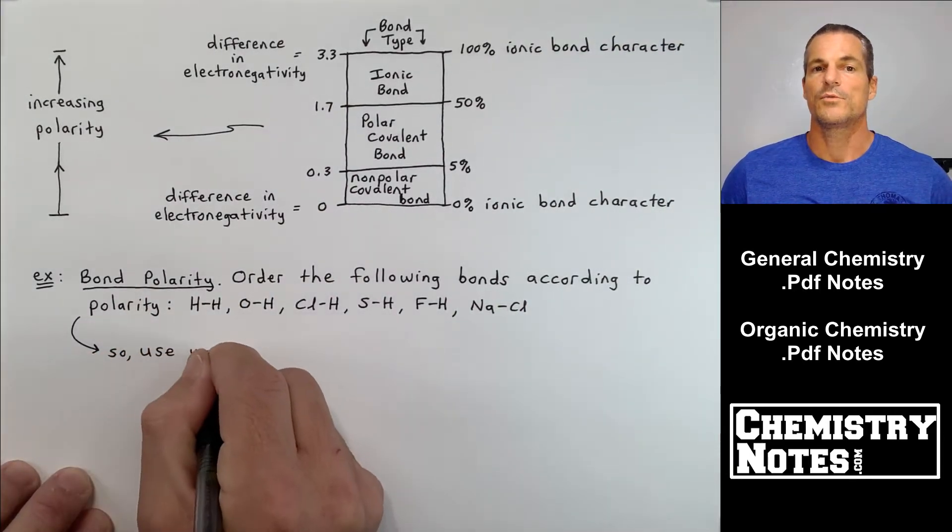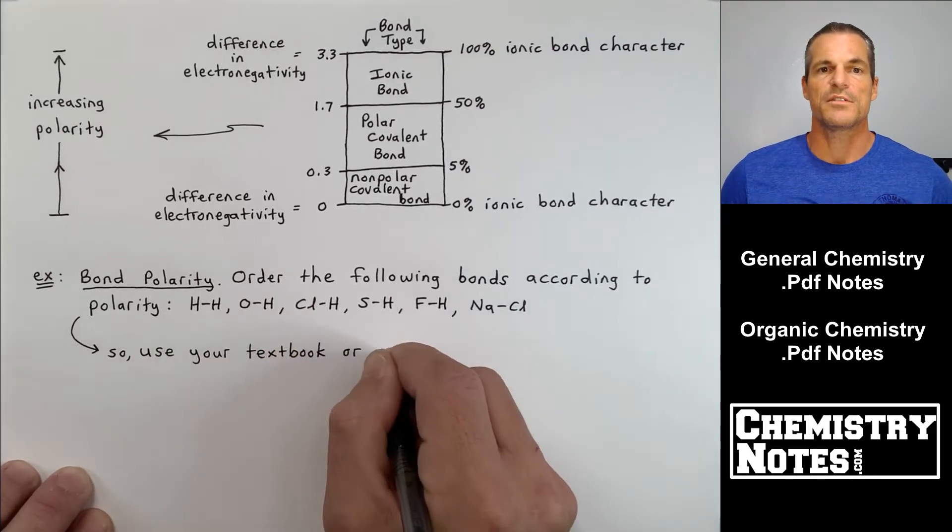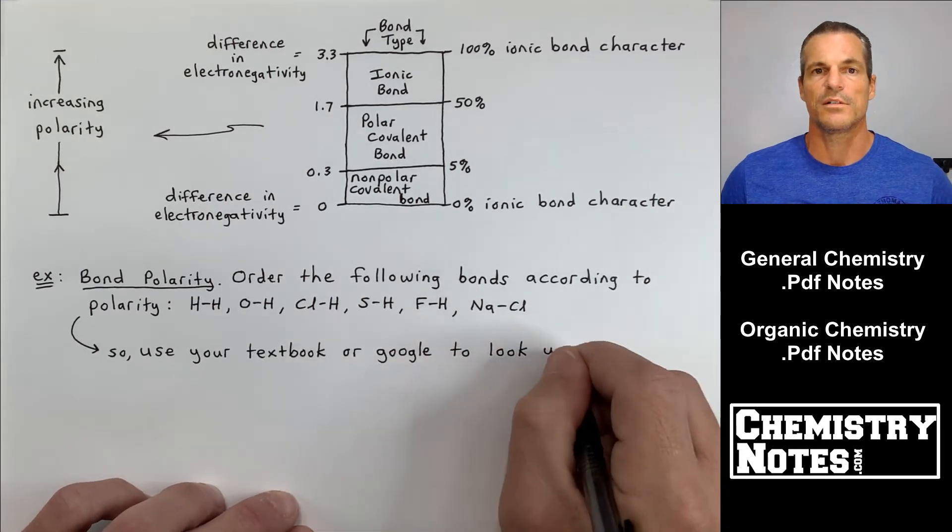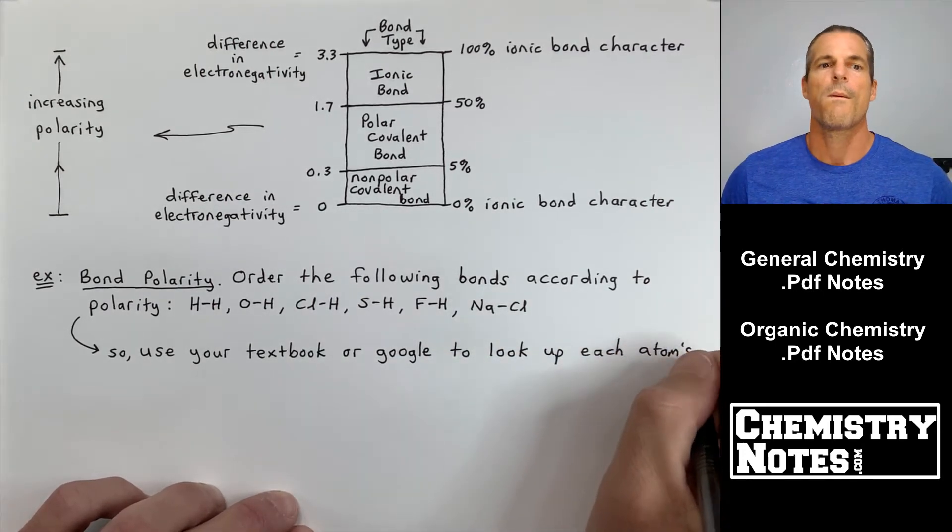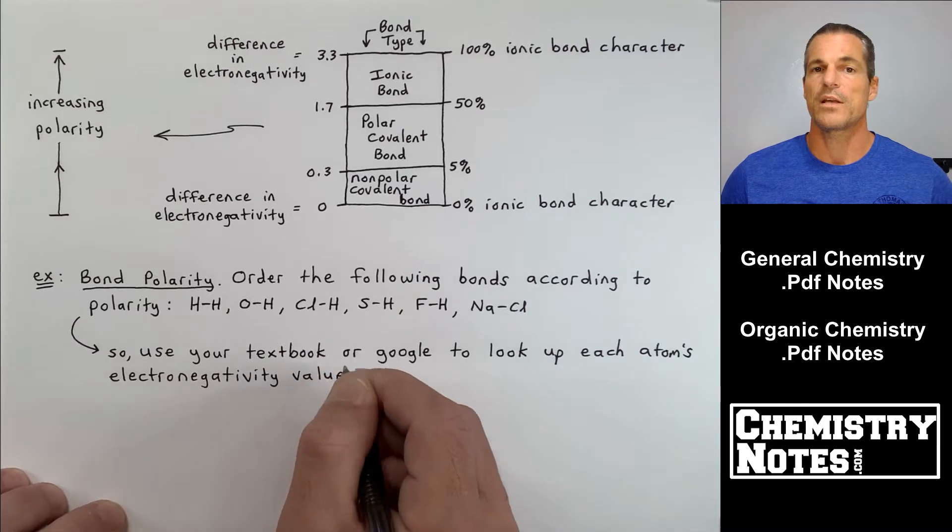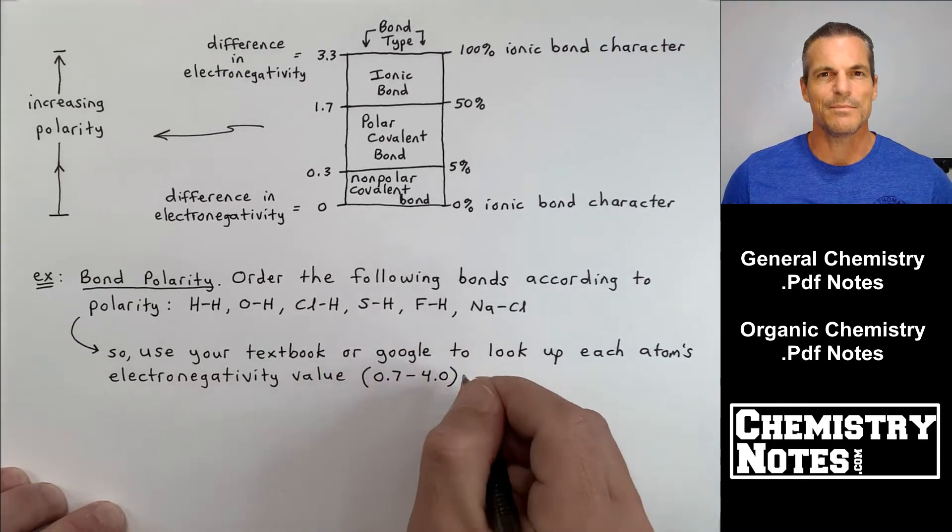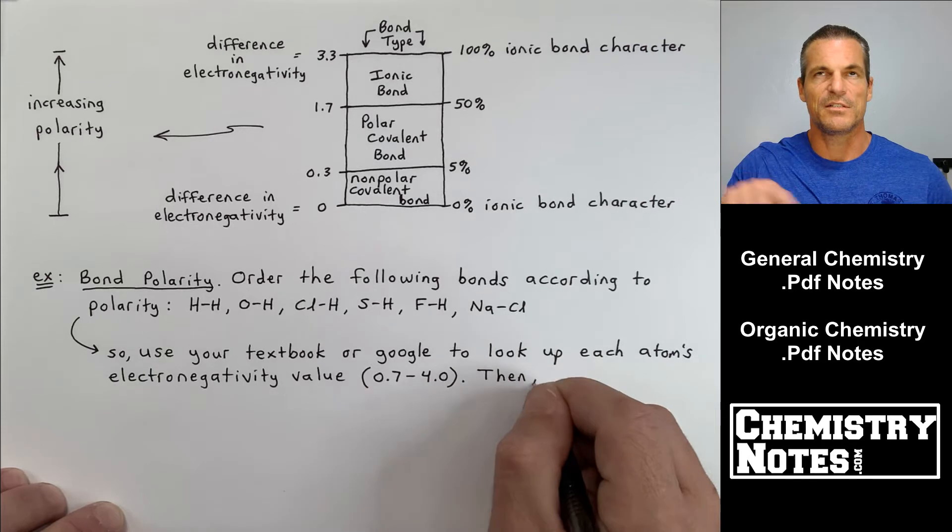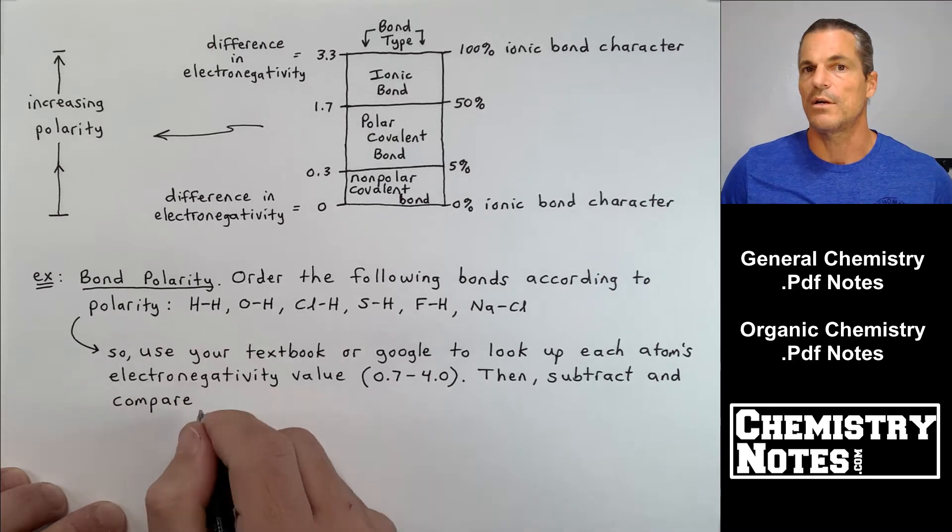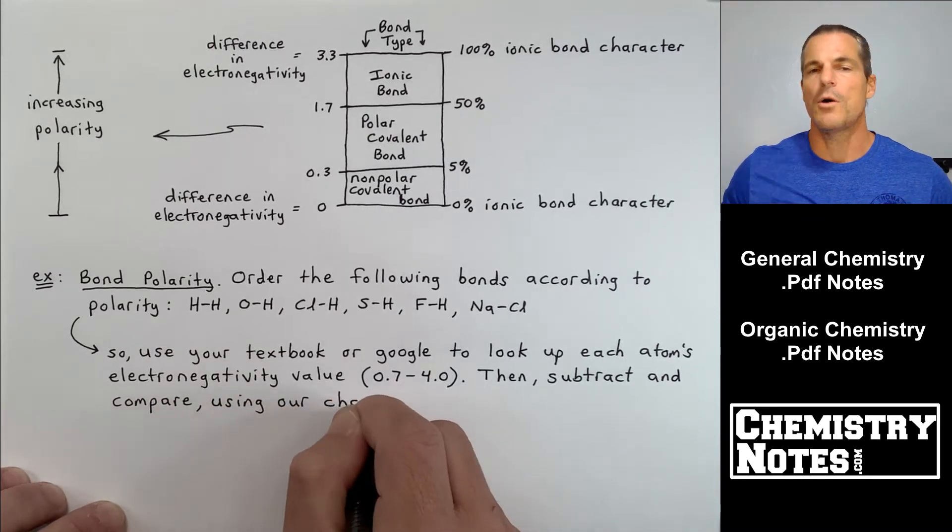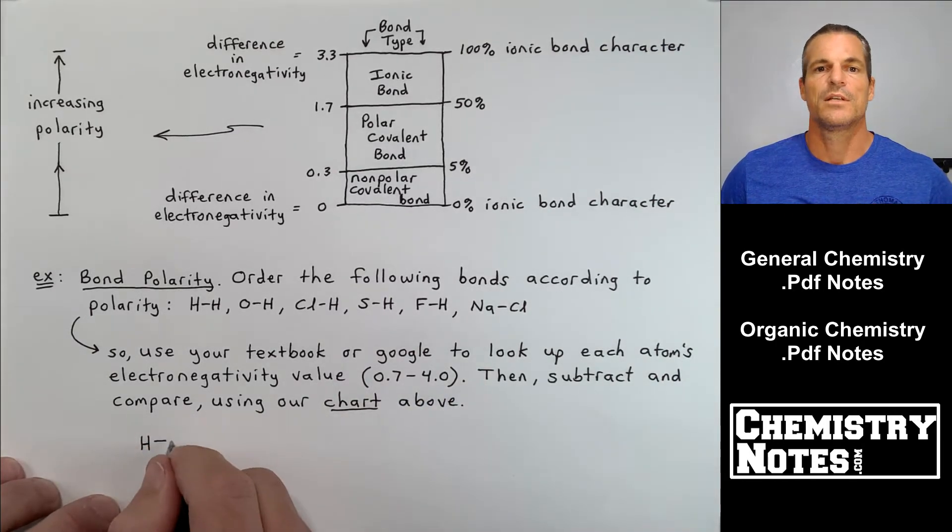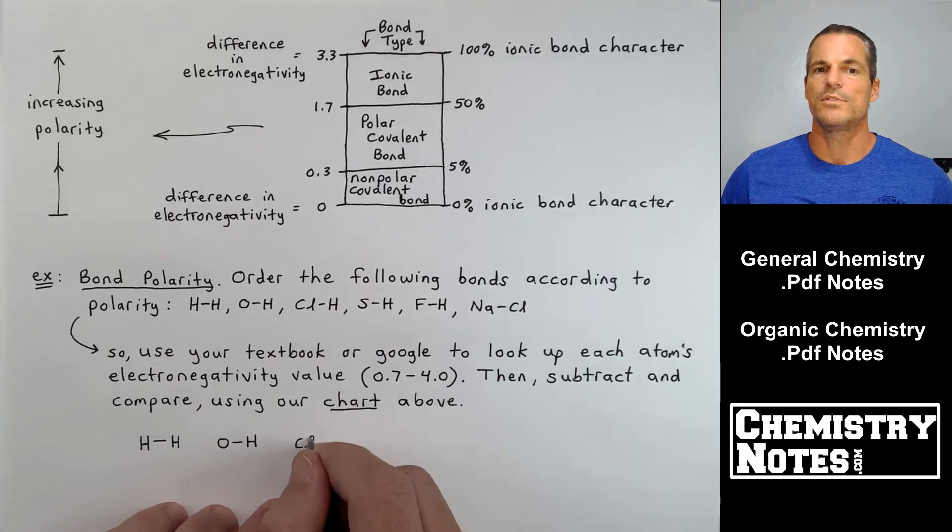So what we're going to do is we would use our textbook or we can use the internet. If you just type in electronegativity values and go to Google images, you'll find a periodic table with all those electronegativity values from 0.7 to 4. So use your textbook or Google and look up each atom's electronegativity value.